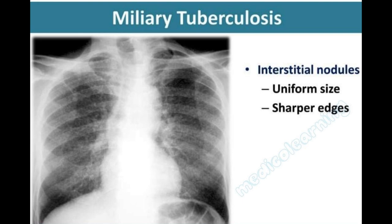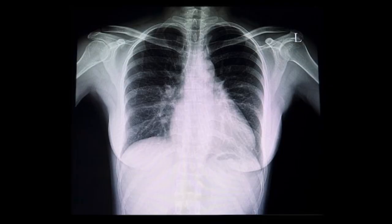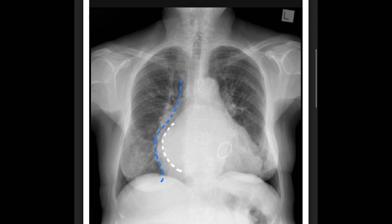Next, for circulation: in cardiomegaly, the cardiothoracic ratio is more than 50%. In left atrial enlargement, you can see a double right heart border and splaying of the carina. In pulmonary edema, there is bat-wing perihilar shadowing and pleural effusions.